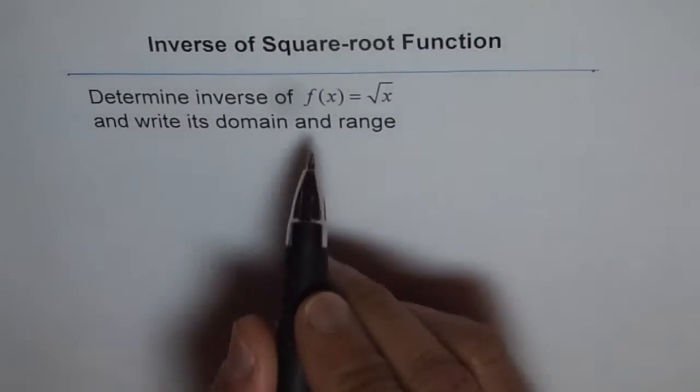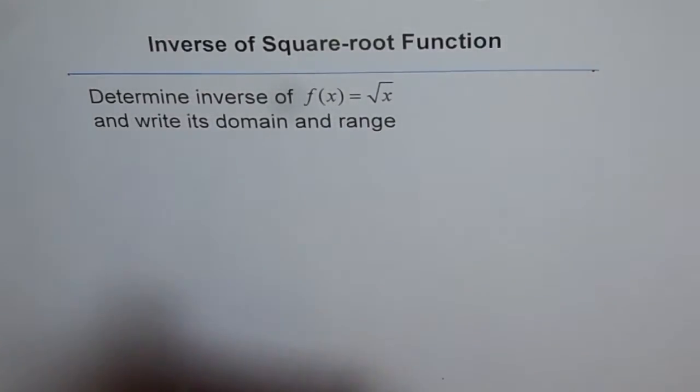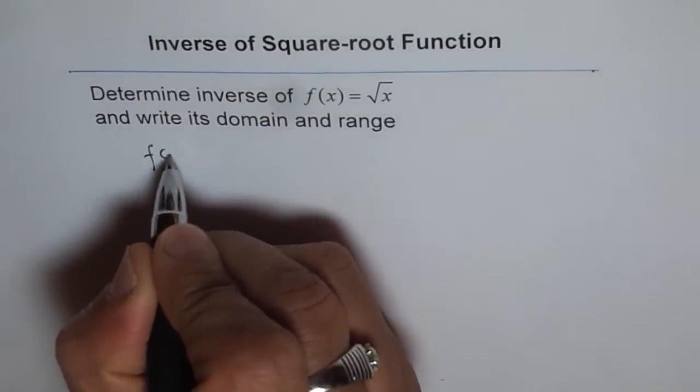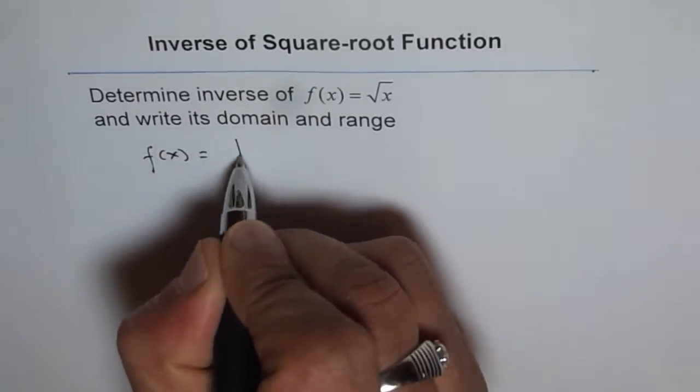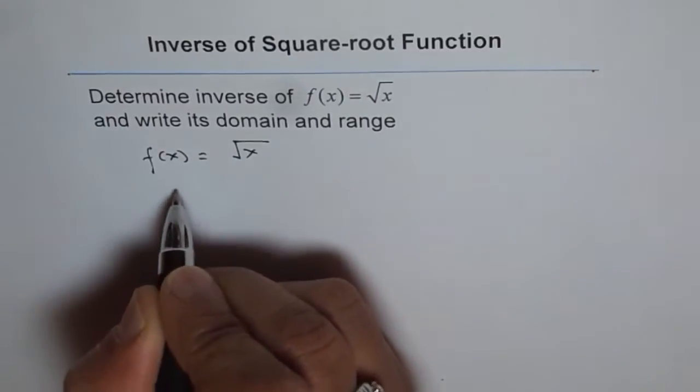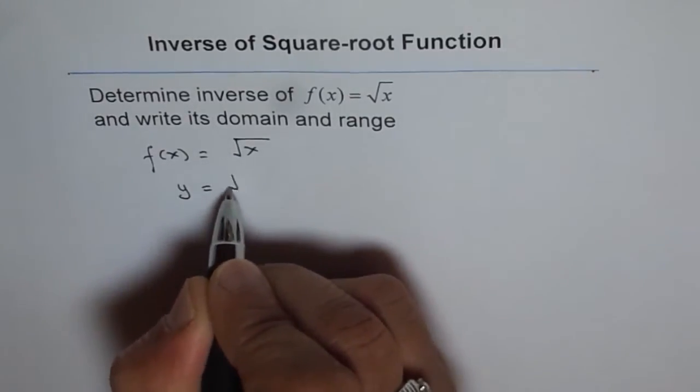Now determine inverse of the function f of x equals square root x. So we have f of x equals square root x. So first step is write this as y equals square root x.